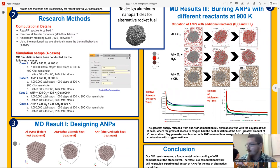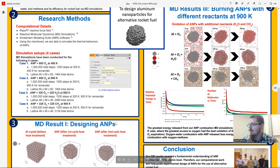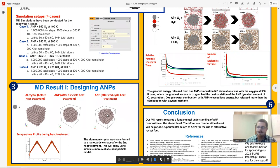That concludes our project. We found that our molecular dynamic results revealed a fundamental understanding of aluminum nanoparticle combustion at the atomic level. Therefore, our computational work can help guide experimental design of ANPs for the use of alternative rocket fuel. This will help with carbon dioxide emissions and the use of fossil fuel, and will further our space navigation to other fuel industries.